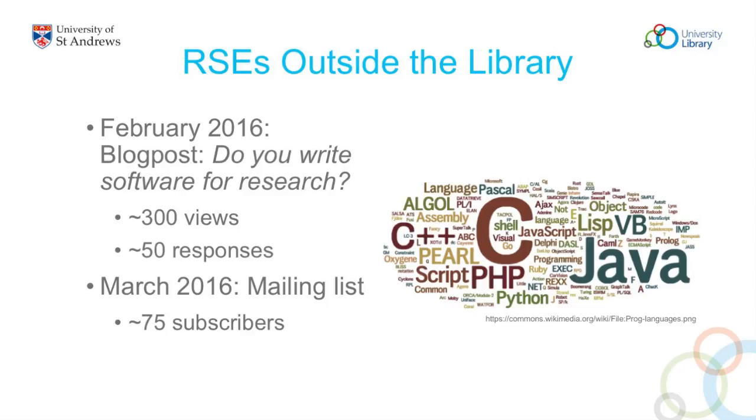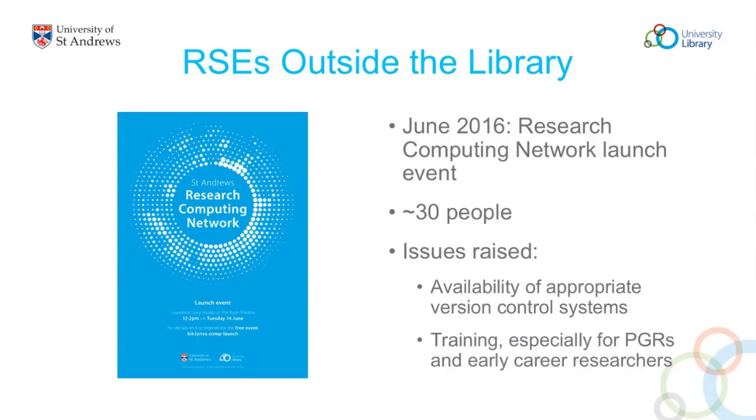We started by putting something up on our library blog. These are big numbers for something on the library blog — we did go out of our way to share it and make sure it got in front of people. We got a sense that there were people interested in this, with about 50 people coming back saying yes, they do something like this. We've got a mailing list with about 75 subscribers. Then in June of last year we had a launch event for what we were calling the Research Computing Network, with about 30 people attending.